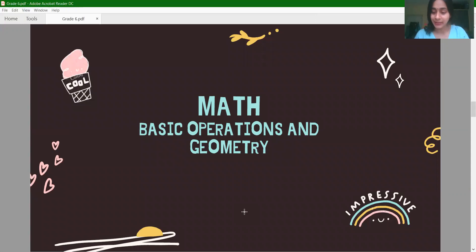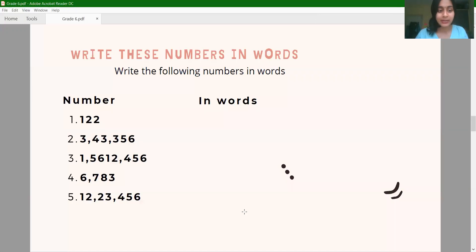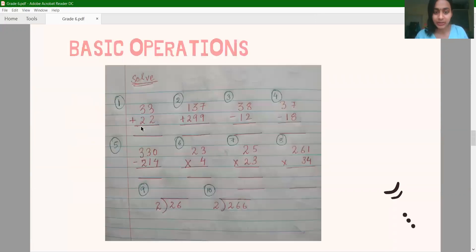Next, there is Maths. We will do basic math today. Nothing very difficult. You all come here. First, these numbers are written here. They are written in spelling. When you say write numbers in words, what does in words mean? Spelling. After that, basic operations.